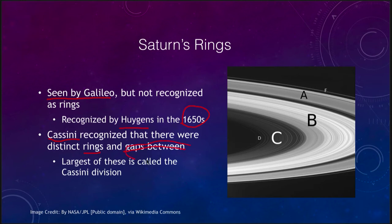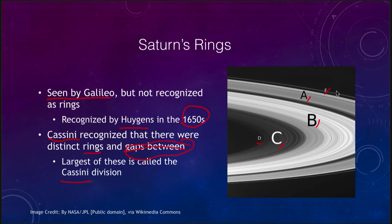The largest gap is now named the Cassini division in his honor. We see the A, B, C, D, and F rings. The primary visible ones are the A, B, and C rings. The D ring is a lot fainter and harder to see, and the F ring is a very thin ring out beyond the A ring, also a little bit harder to see.